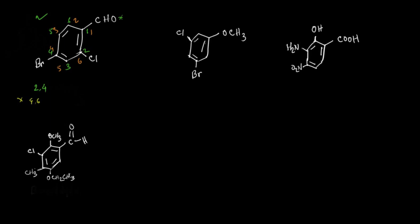So our name of the compound will be 4-bromo-2-chlorobenzaldehyde. We have to write bromo before chloro because B comes before C, and we have to write the name of an organic compound alphabetically. We also always have to put a dash between a letter and a number.